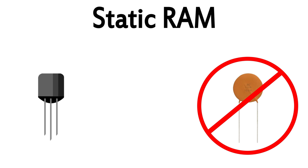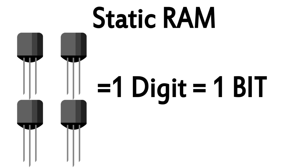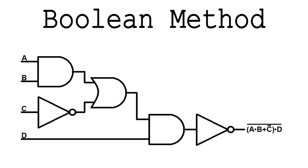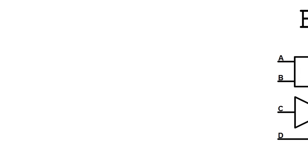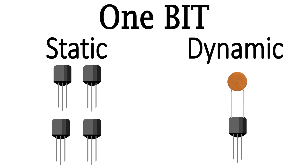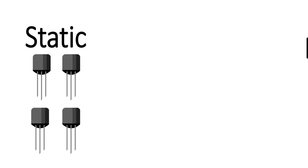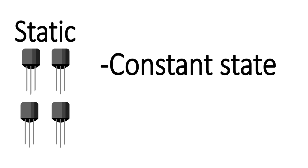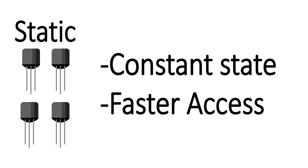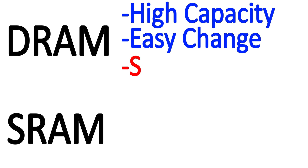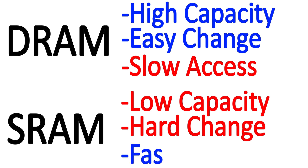Static memory uses only transistors, but it requires four or sometimes six of them in order to represent one single digit of binary — one bit of data. Static RAM accomplishes this by using something called the Boolean method. Because static RAM requires more transistors to represent a single bit of information, it obviously requires more physical space on your RAM chips, resulting in less storage space. The advantage of this method is that unlike capacitors, static memory is constantly in the state that it's in — whether it's representing a one or a zero, it remains that way until it's told to change. This means it can be accessed much faster than dynamic RAM, which sometimes has to wait for a refresh before it can be read. So we have a high-capacity, easy-to-change, but somewhat slow system of memory, and a low-capacity, harder-to-change, but instantly readable system of memory.